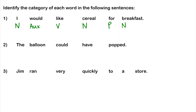In 'The balloon could have popped': 'balloon' is a noun; 'the' is a determiner, and determiners pair with nouns, so it appears right before the noun. 'Could' is a modal auxiliary, 'have' is a supporting auxiliary verb, and 'popped' is the main verb in past tense. You can see that words like 'could' and 'have' are all supporting that main verb.